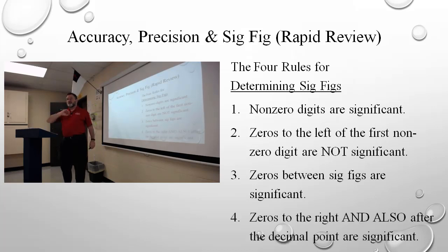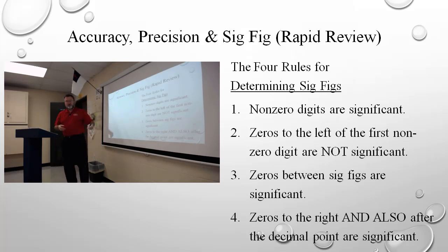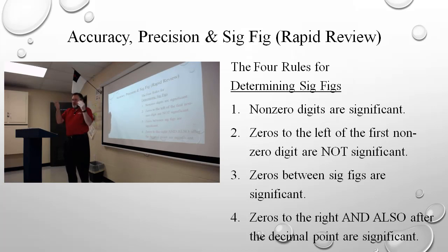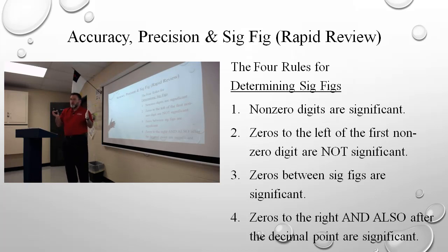Remember, they have to be to the right of the decimal, and they have to have no other non-zeroes after them. Once you're done going through all four of those rules, either crossing out or underlining, go back and see if there are any zeros remaining. But typically what will happen is there will be zeros which before you did not think were significant, but because of trailing zeros, they become significant. If you find anything not yet designated, go from top to bottom again and apply the rules again.